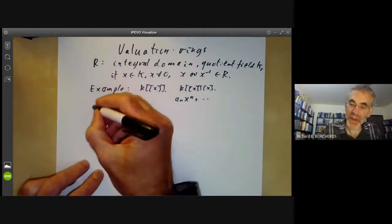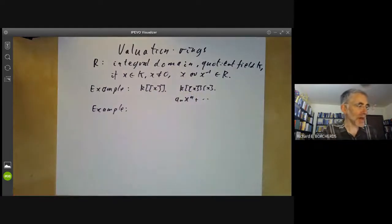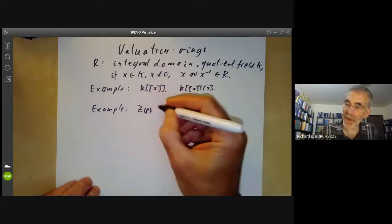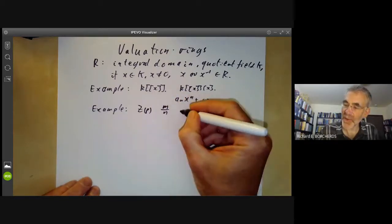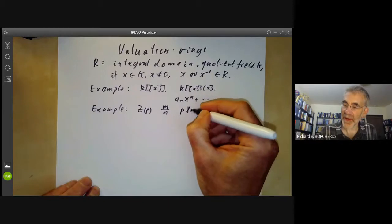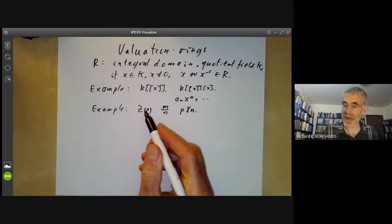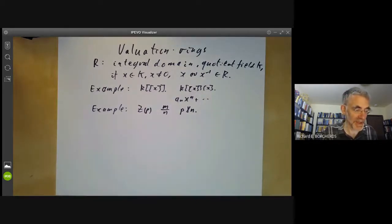Another example is the ring Z_P, the ring localized at P, which consists of all integers M over N with P does not divide N. It's obvious that the quotient field is the rationals, and any non-zero rational, either the rational or its inverse, is in here.